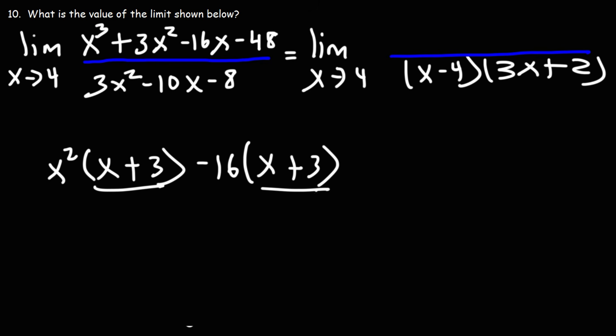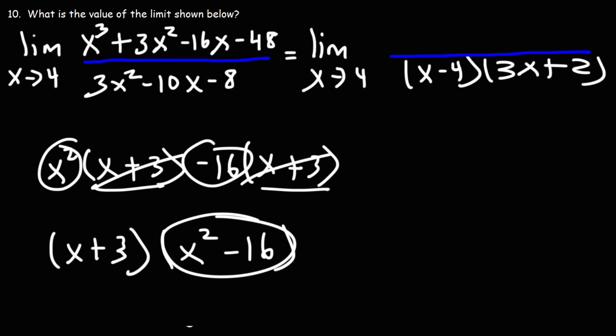So next, we could factor out another GCF, x plus 3. So we're left with x squared and negative 16. Now, notice that we have a difference of perfect squares. So for x squared minus 16, we could factor that further using the formula a squared minus b squared is a plus b times a minus b.